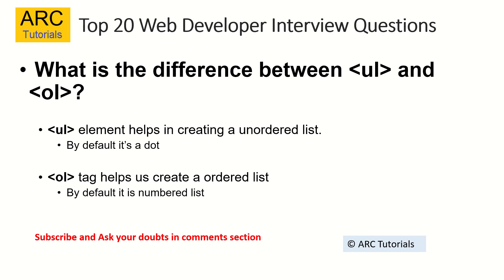What is the difference between UL and OL tags? UL stands for unordered list — by default, elements in an unordered list will have a bullet point. OL stands for ordered list — the behavior is the same except the list items are numbered in order. This is very basic knowledge expected of any junior or full-stack developer.